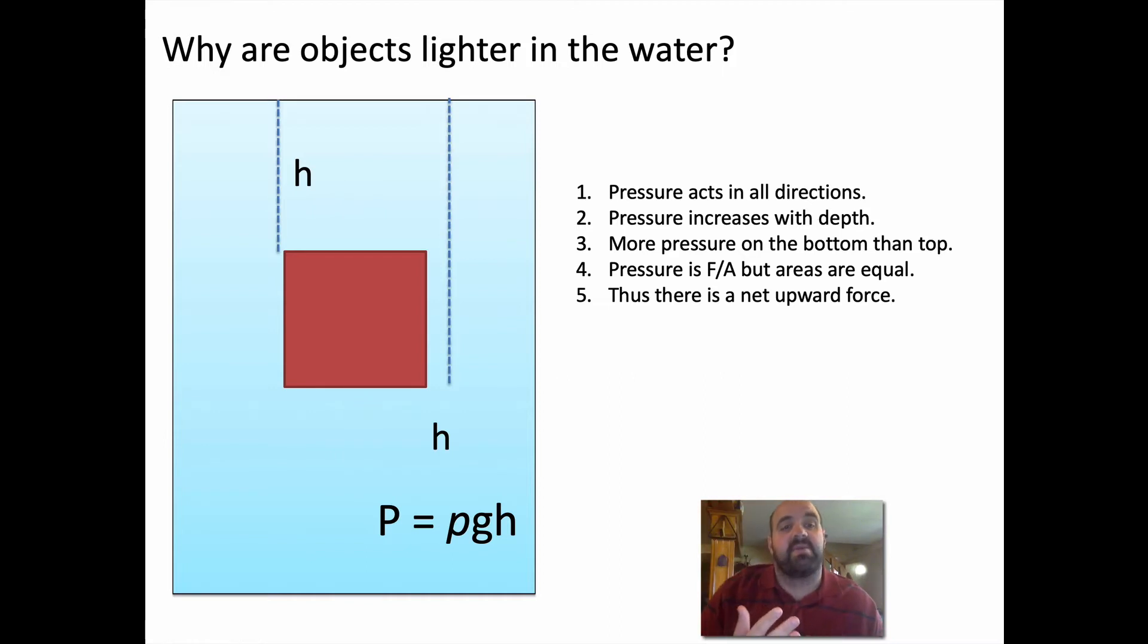We know that pressure is force over area. The areas are equal, so the area is not changing anything. What that means is there's more force pushing up than pushing down. So there's going to be a net upward force because there's more pressure pushing up than down. We know there's an imbalance of forces, so there's going to be a net upward force.